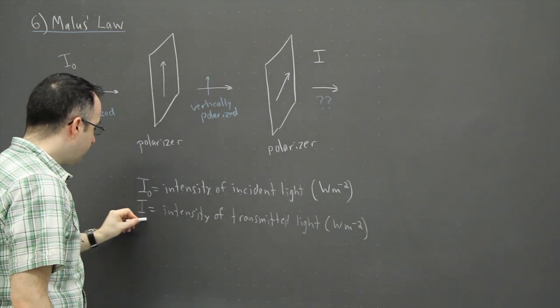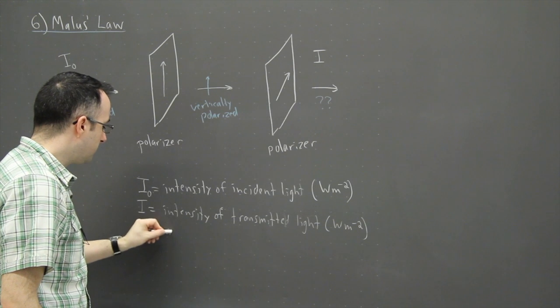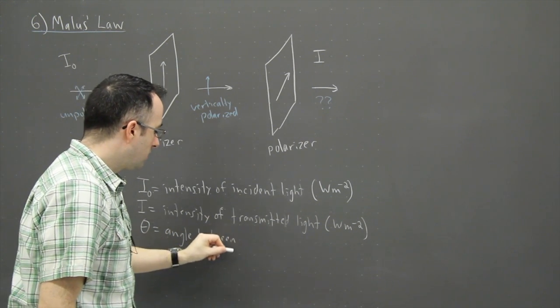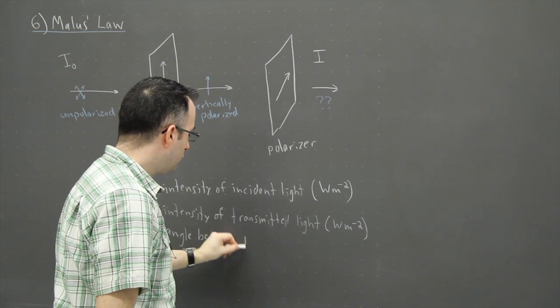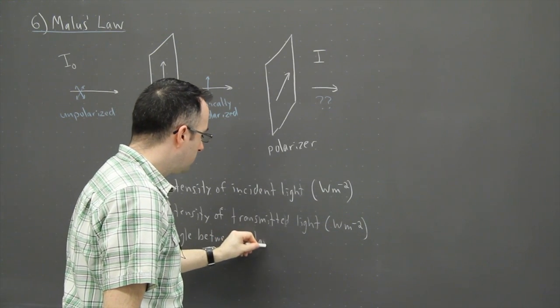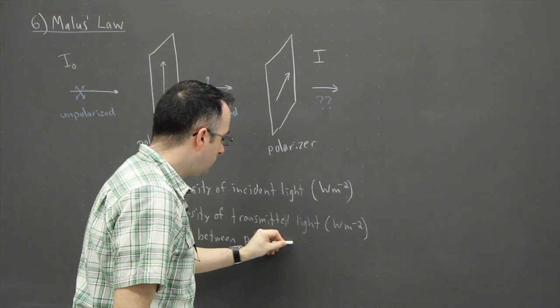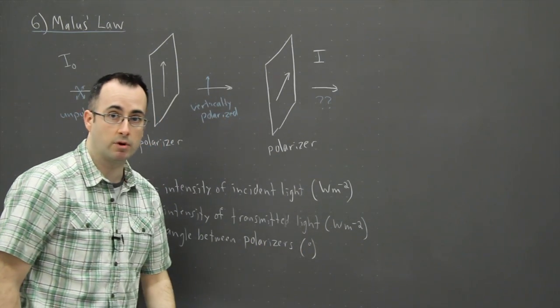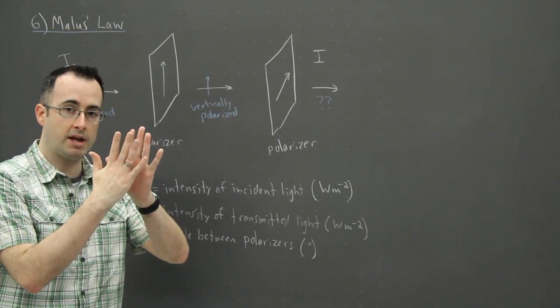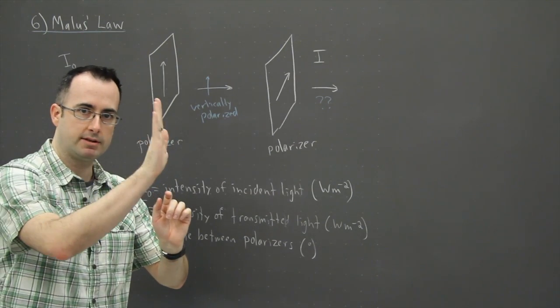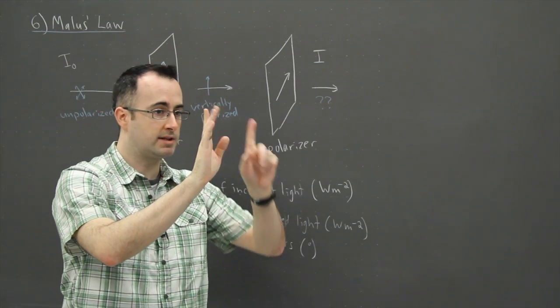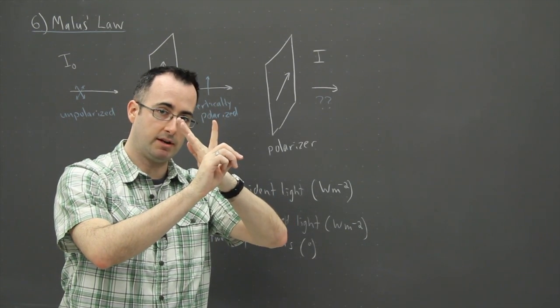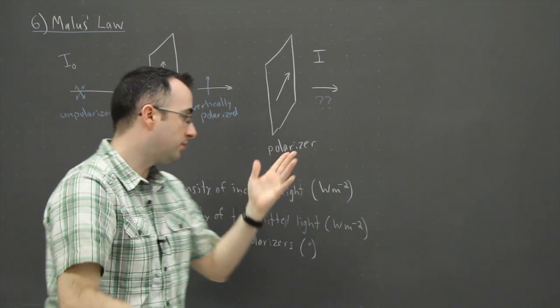We're also going to define something called theta, which is going to be the angle between the two polarizers. That angle can be in degrees, it doesn't have to be in radians like we were seeing before. When I say the angle between them, I mean if one is vertically polarized, and the other one is like this, then we would measure the angle between here and here, in degrees, and that's what we would use.